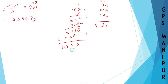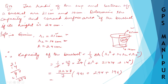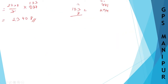The capacity of the bucket is 23,408 cm³. Now let us do the second part of the question, which asks us to find the curved surface area of the bucket.